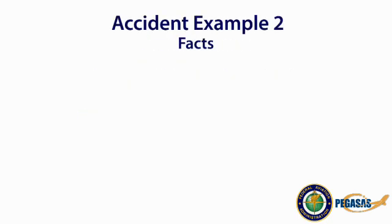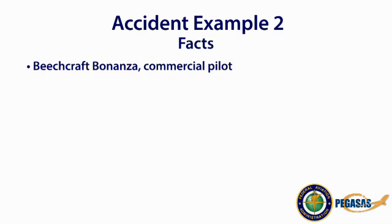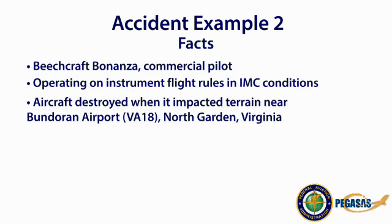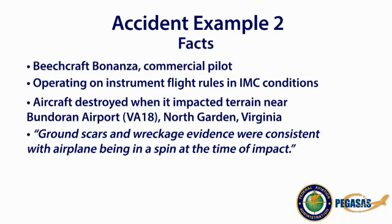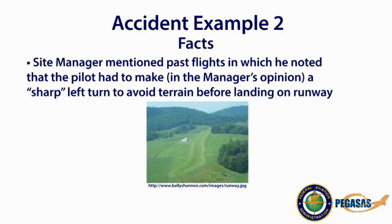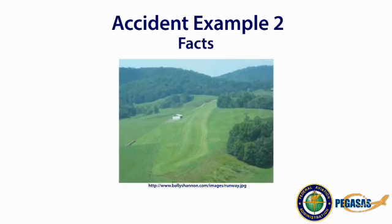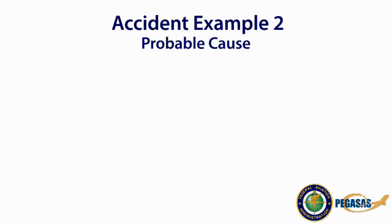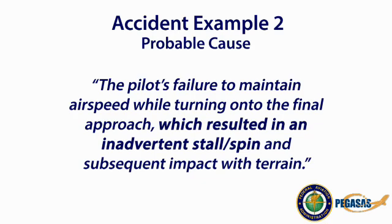In the second accident case study, the aircraft was a Beechcraft Bonanza B-36TC flown by a commercial pilot, operating on instrument flight rules in IMC conditions. The aircraft was destroyed when it impacted terrain near Bundaran Airport, North Garden, Virginia. Ground scars and wreckage evidence were consistent with the airplane being in a spin at the time of impact. The site manager noted that the pilot had to make a sharp left turn to avoid terrain before landing. The NTSB found the probable cause to be the pilot's failure to maintain airspeed while turning onto final approach, which resulted in an inadvertent stall spin and subsequent impact with terrain.